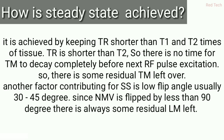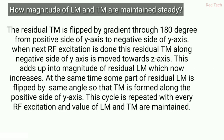Before the transverse magnetization has completely decayed, the next RF pulse excitation is applied, so there is some residual transverse magnetization left over. Another factor is the short flip angle, which is usually 30 to 45 degrees. When the net magnetization vector is flipped by less than 90 degrees, there is always some residual longitudinal magnetization left.